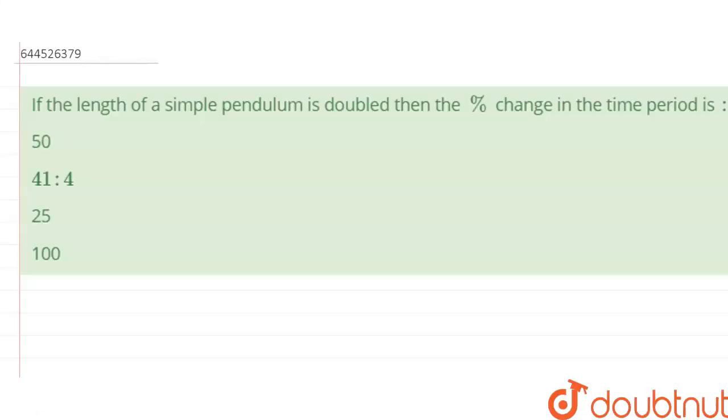Hello everyone, so the question is: if the length of a simple pendulum is doubled, then the percentage change in the time period is?